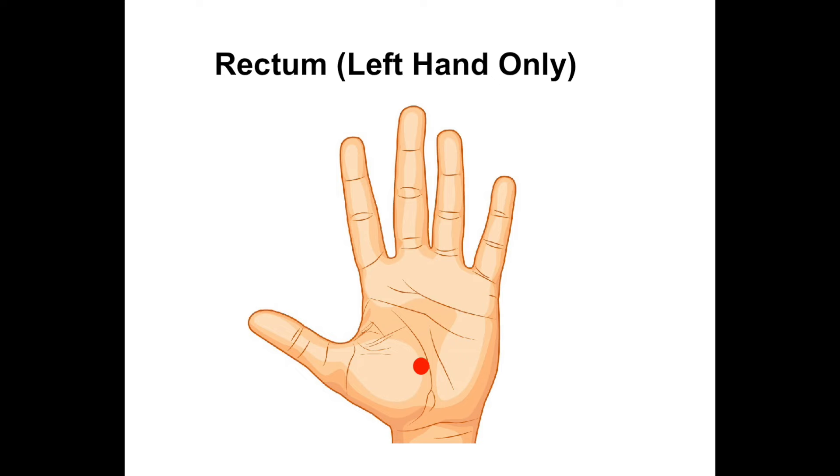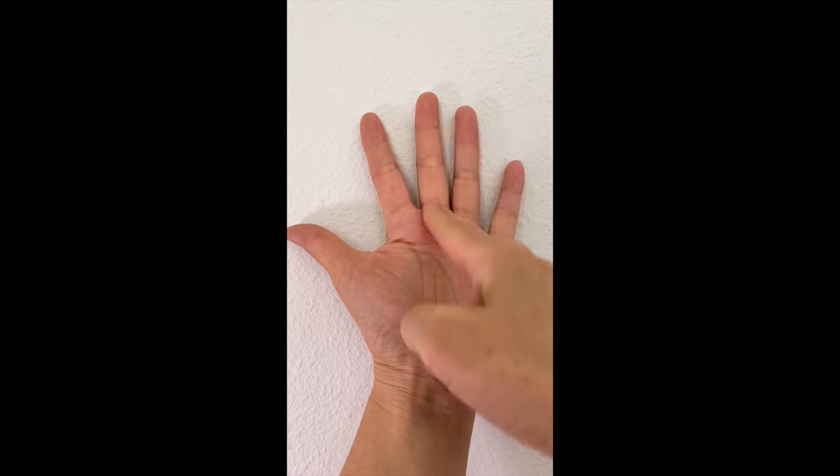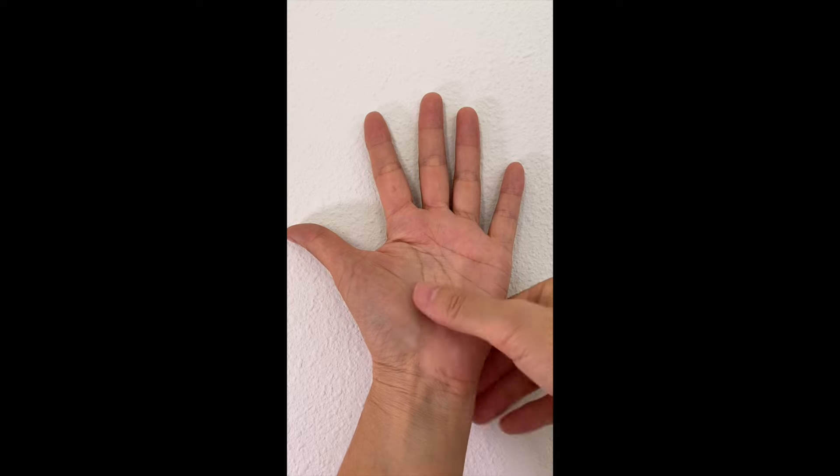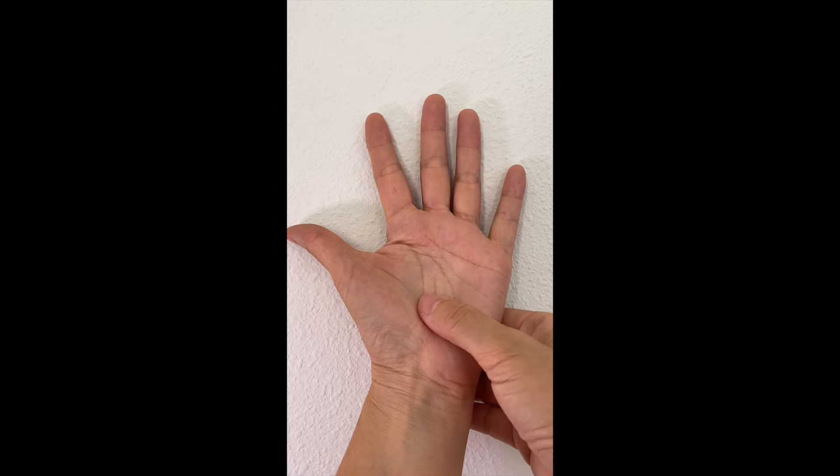The next one is rectum. It is located on the middle finger line, two thumb widths from the wrist line. This one is only on your left hand as well. Press with a hooked thumb for 7 seconds.